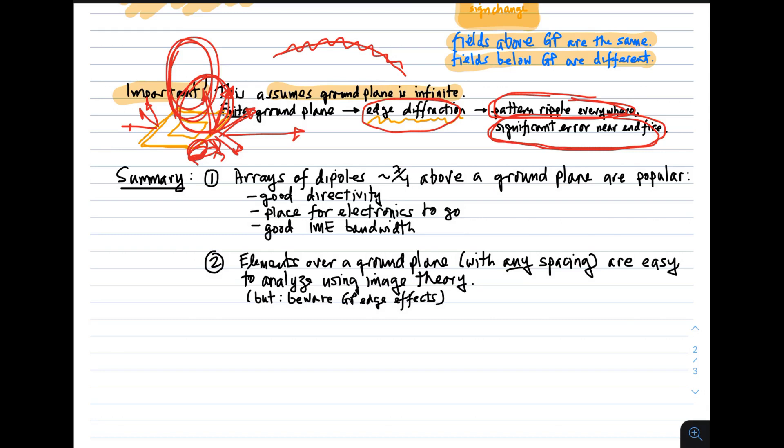To summarize, two main points. Arrays of dipoles about one-quarter wavelength above a ground plane are popular. They're popular for three reasons. One is they have pretty good directivity. Another one is that the ground plane gives a logical place for the electronics to go, namely below the ground plane where they will not electromagnetically interact with the elements. And they have reasonable IME bandwidth, typically much better than patch elements and arrays comprised of patches. The second main point is that elements over a ground plane with any spacing are easy to analyze using image theory, as long as you keep in mind this limitation about edge effects, which tend to be more important in the plane of the array and below the array, where diffraction becomes the dominant contribution and the edge elements are relatively less important. That concludes this lecture on ground planes.